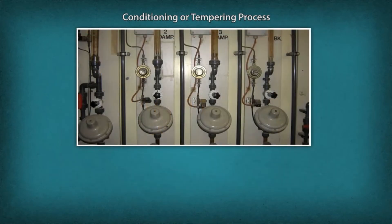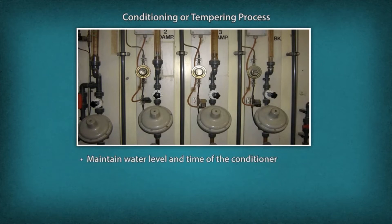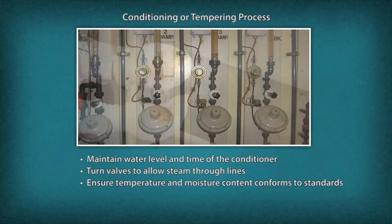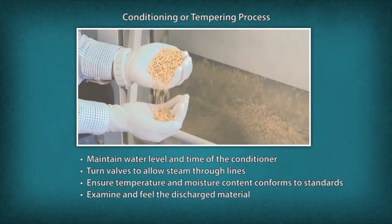A grain mill operator performs the following tasks at the conditioning stage: Maintain water level and time of the conditioner. Turn valves to allow steam through lines. Observe gauges to ensure temperature and moisture content conforms to standards. Examine and feel the discharged material.